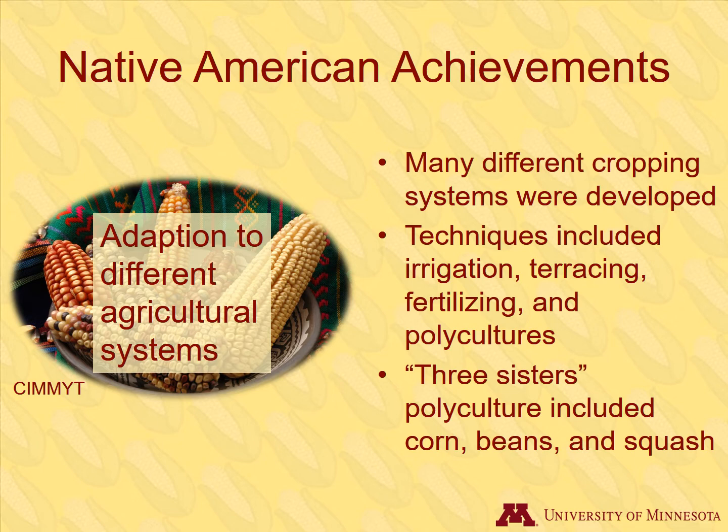Crop breeding and development of agricultural systems co-evolved together. Native Americans in different regions did not have the same types of cropping systems. They developed many techniques such as irrigation, terracing, fertilizing, and polycultures. Many Native American cultures in North America used polycultures, which is companion planting where several crops are grown next to each other.